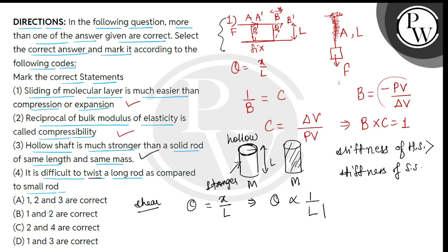So, if the length will increase, then the value of theta is small. So, it means that we can see here, that if we take small rod, then what will happen for small rod? For small rod, the value of l will decrease, then the value of theta will increase.